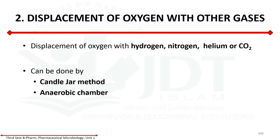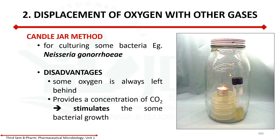The next method is displacement of oxygen with other gases. The candle jar method uses a candle with a flame inside a sealed jar. It was used for culturing bacteria like Neisseria gonorrhoeae. However, there are disadvantages: some oxygen is always left behind, and it provides a concentration of carbon dioxide which will stimulate some bacteria. These are the disadvantages of the candle jar method.